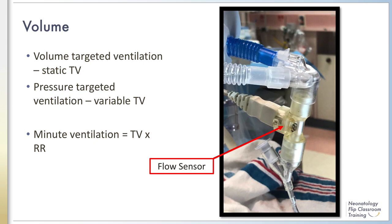A volume of gas is delivered to the patient with each inspiration, whether the inspiration was generated by the machine or the patient. During volume-targeted ventilation, the volume delivered to the patient is static regardless of lung compliance. With pressure-targeted ventilation, the volume delivered with each breath is variable depending on lung compliance. With the use of flow sensors, both the inhaled and exhaled tidal volume can be measured, and the difference between them is used to calculate the percent of endotracheal tube leak.